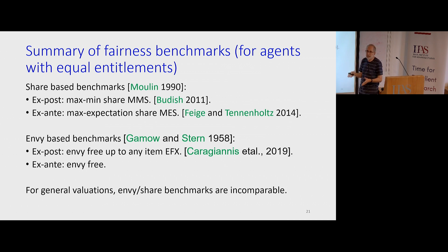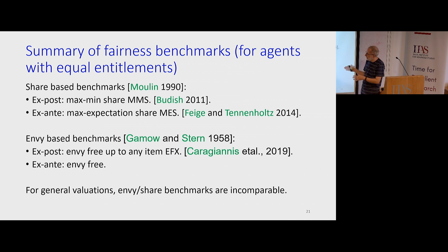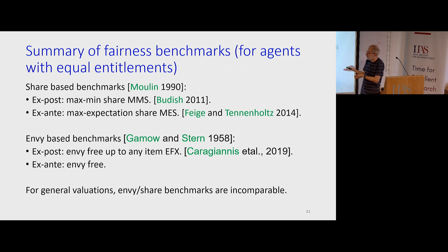Here's a summary of fairness benchmarks: share-based fairness benchmarks include the maximin share (MMS) ex post and the maximum expectation share (MES) ex ante. Envy-based benchmarks include envy-freeness ex ante and envy-free up to any item (EFX) ex post. For general valuations, envy and share-based benchmarks are incomparable. For additive valuations, envy-freeness implies MMS but not vice versa. If the valuation is not additive, getting your maximin share might be better, since in an envy-free allocation you might get very little value.